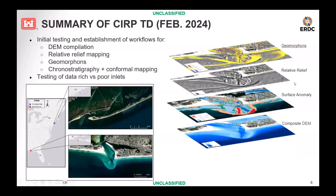This is a brief summary of what was presented in the last technical discussion in February by Justin and Charlene, which focused on initial testing and establishing workflows for DEM compilation, relative relief mapping, geomorphons, chronostratigraphy, and conformal mapping. Testing was done in inlets with both poor and rich data — the inlet with poor data is the one at Fire Island in New York, and the one with rich data is East Pass in Florida, on the Gulf side of the coast.